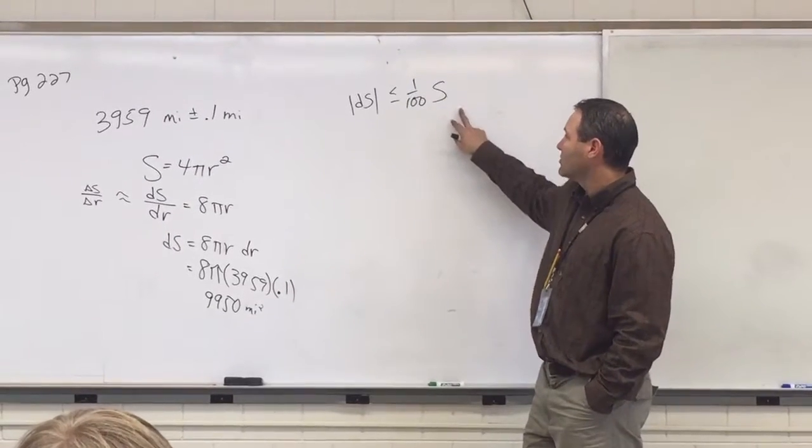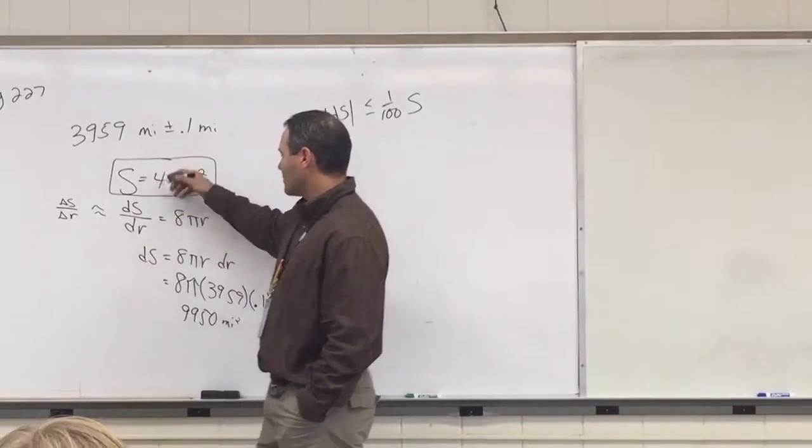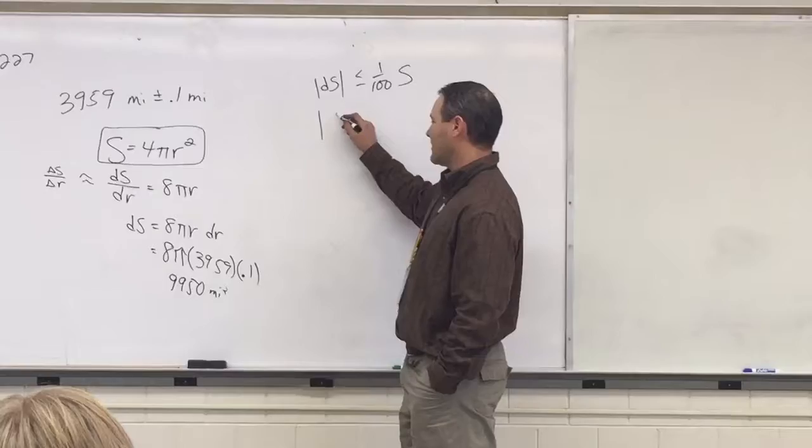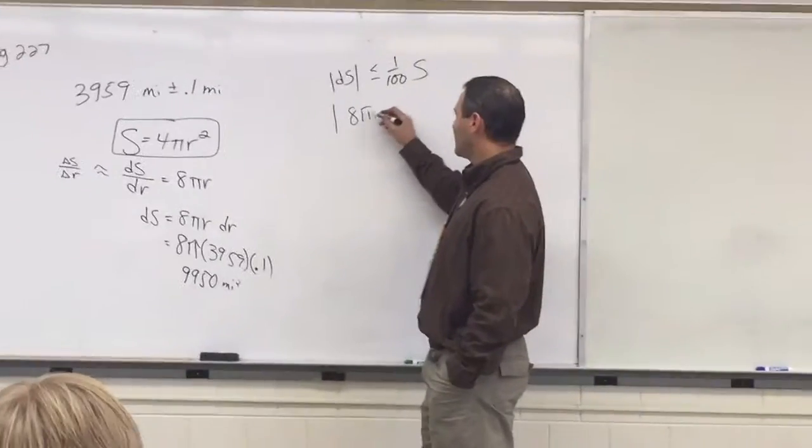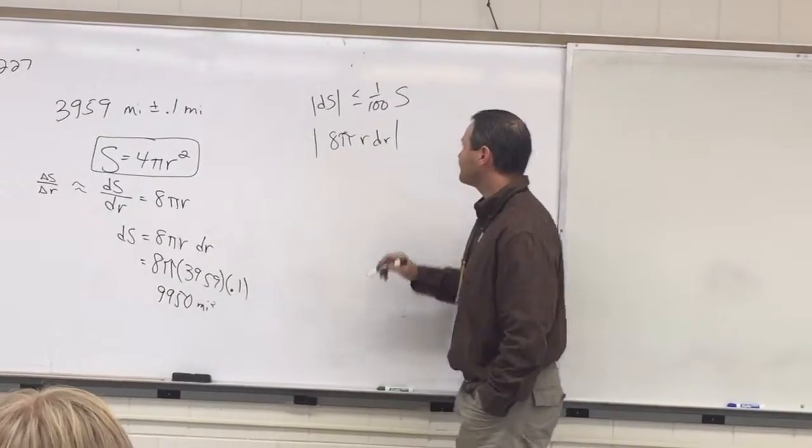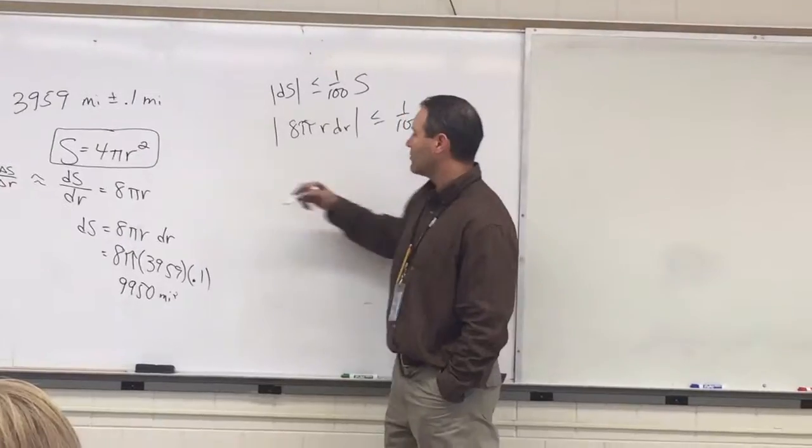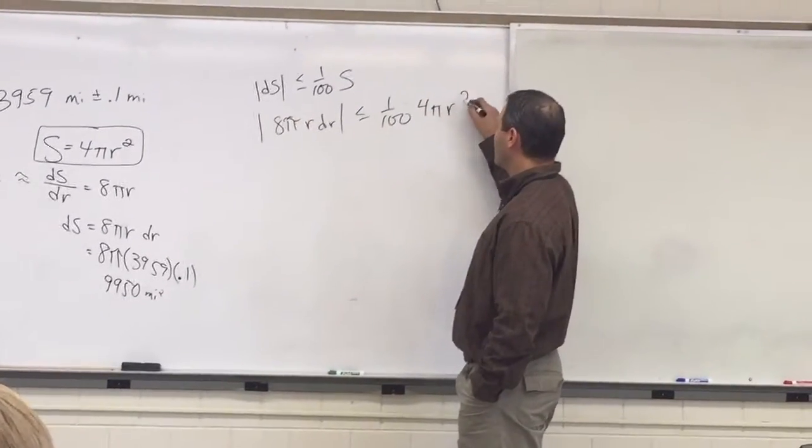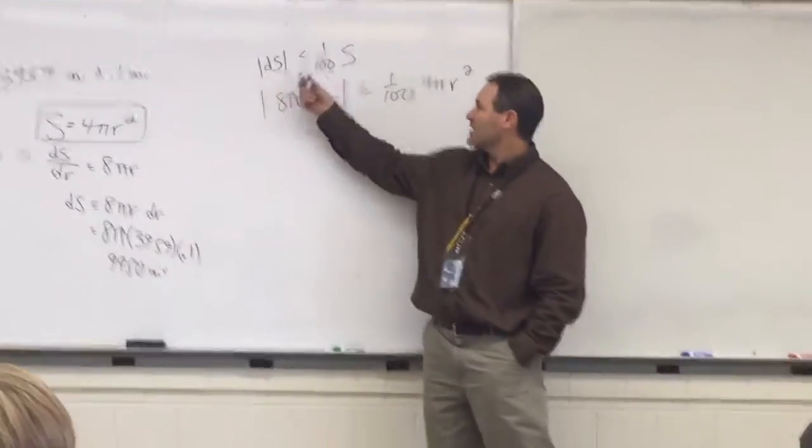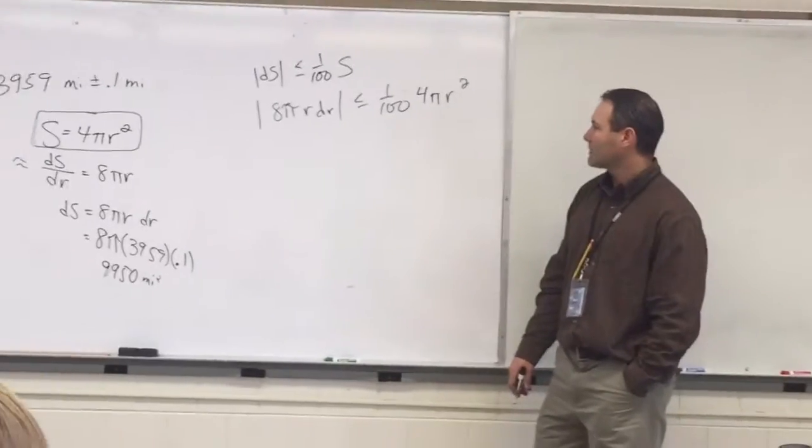Okay, so now we'll do the process. We'd be given this same equation. We would do the derivative and solve for ds. We already did it. So it's absolute value of 8 pi r dr. And our s is 4 pi r squared. So all I did was substituting the ds and the s from the problem.